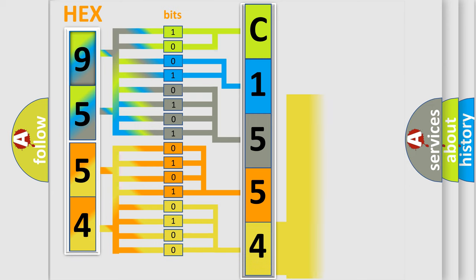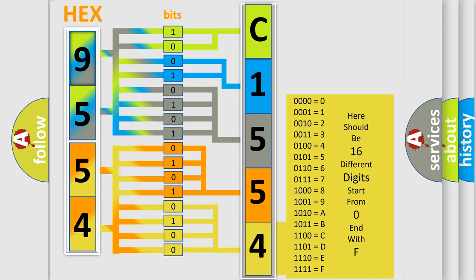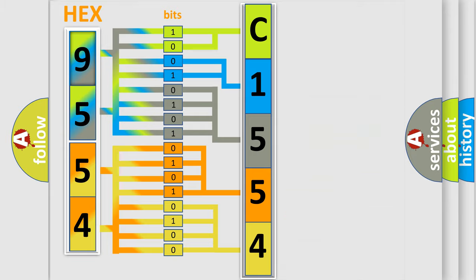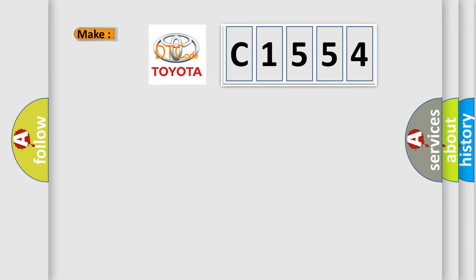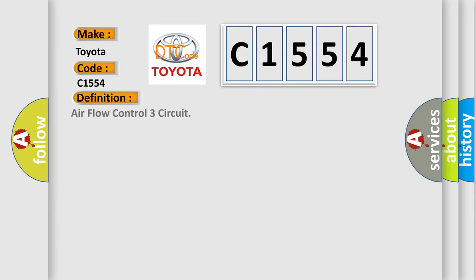A single byte conceals 256 possible combinations. We now know in what way the diagnostic tool translates the received information into a more comprehensible format. The number itself does not make sense to us if we cannot assign information about what it actually expresses. So, what does the diagnostic trouble code C1554 interpret specifically for Toyota car manufacturers?